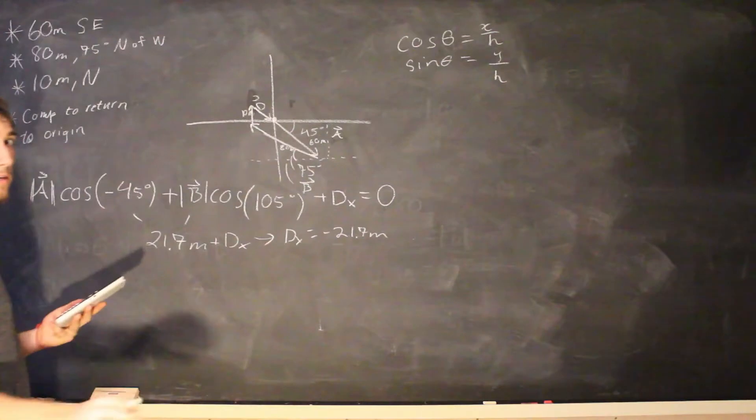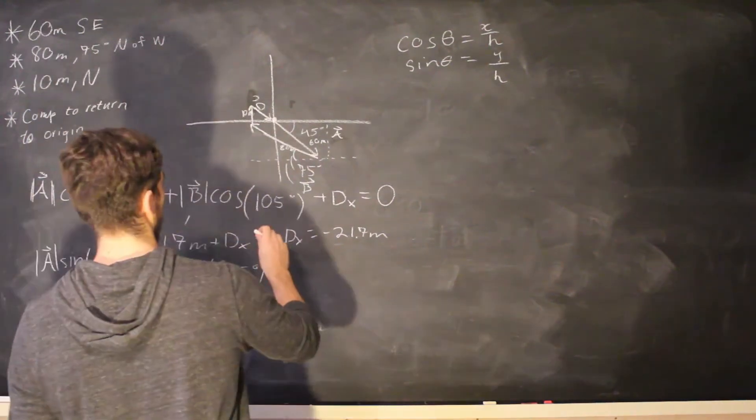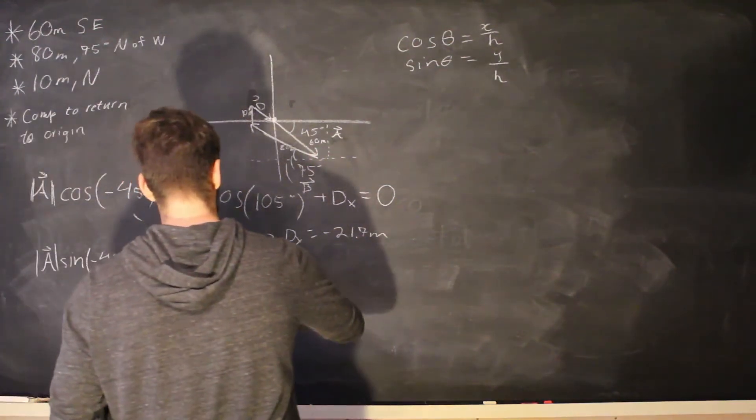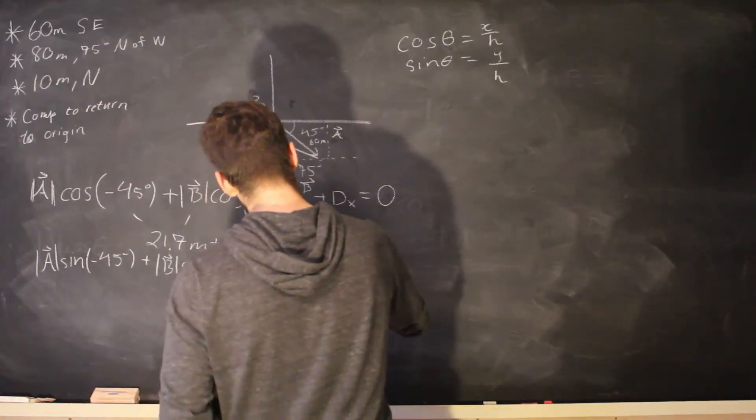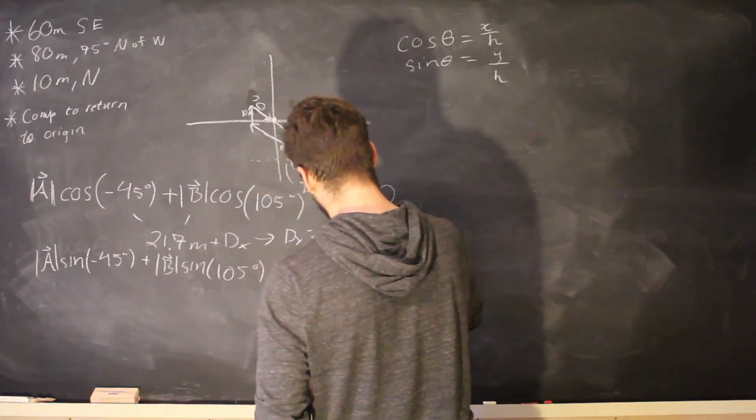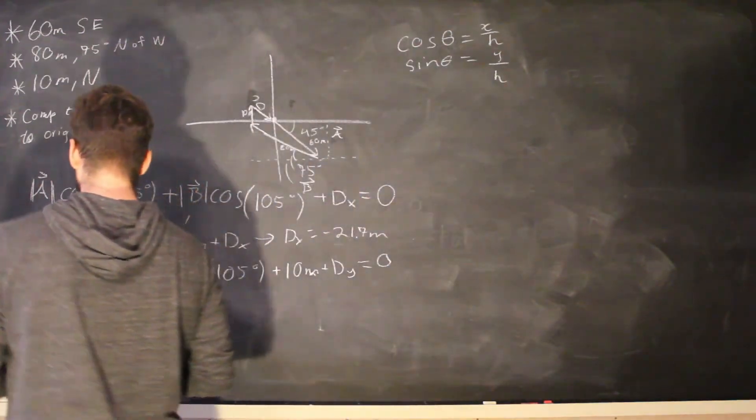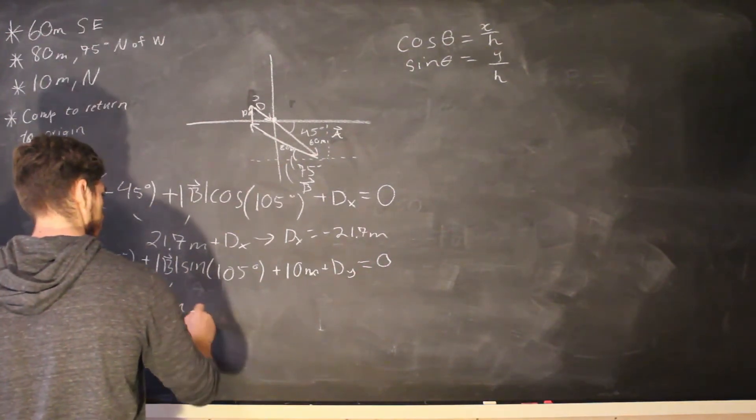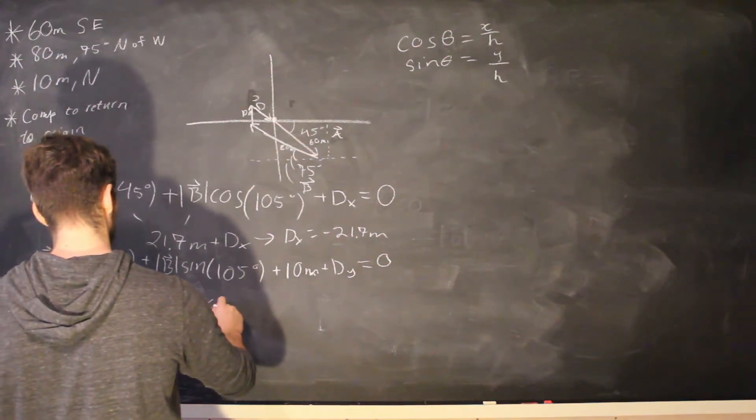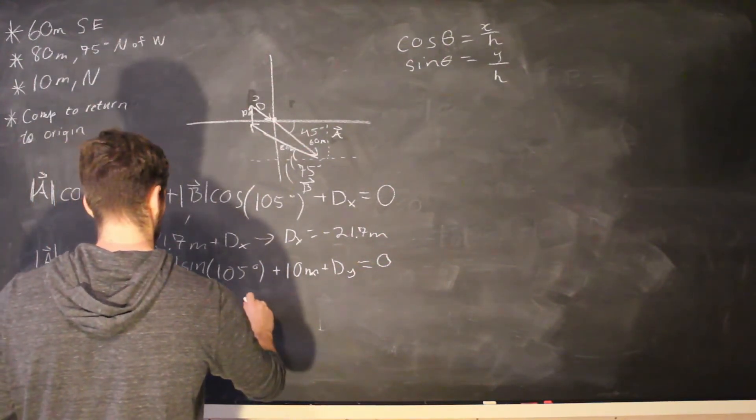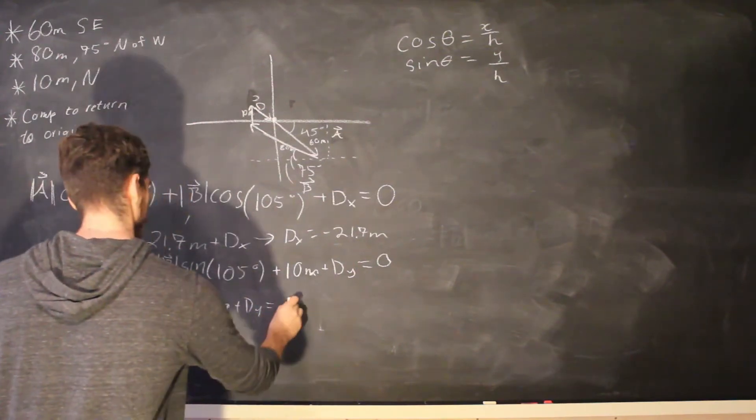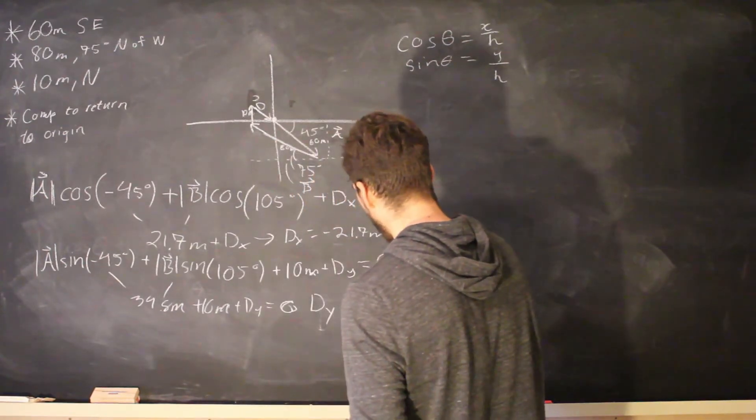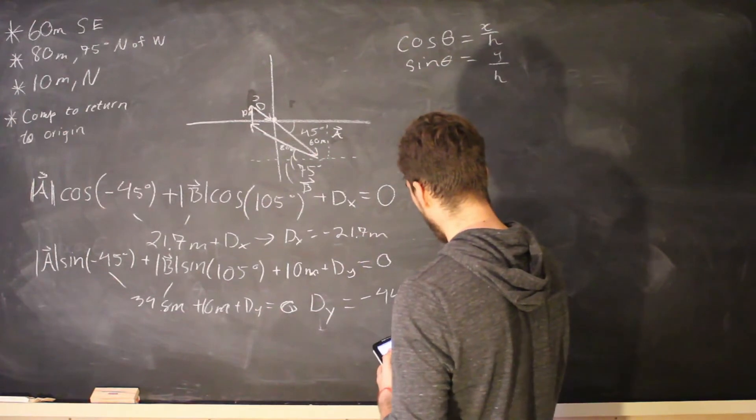And then for the y components it's going to be the same thing except it's going to be sine. But this time we do include the third vector because it's directly 10 meters up. So plus 10 meters plus d of y is equal to zero. So let's solve for that. These two are 34.8 meters. So plus 10 meters plus d of y equals zero. Which means d of y is equal to negative 44.8 meters.